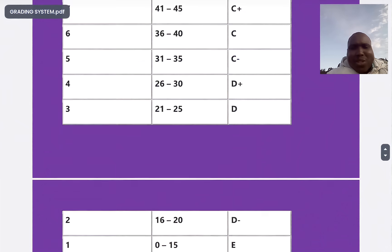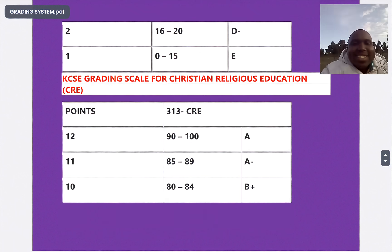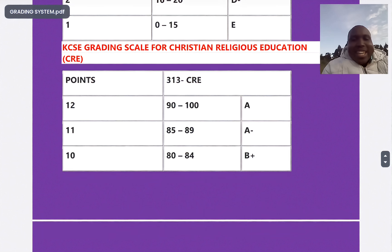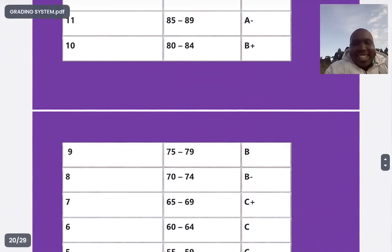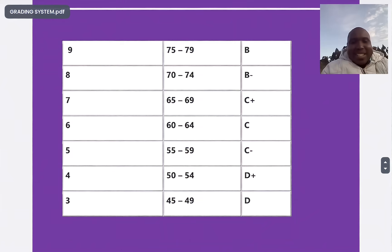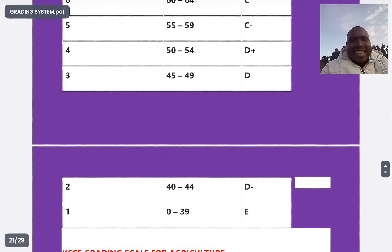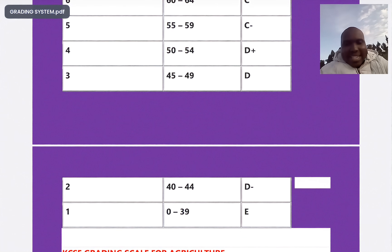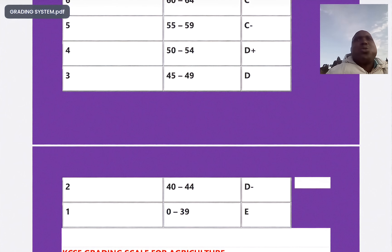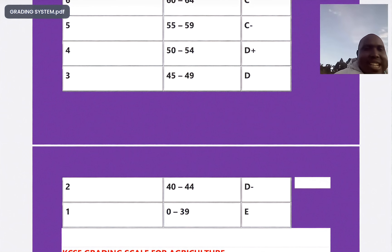CRE — for you to score an A in CRE you must score 90 to 100. A minus is 85 to 89, B plus is 80 to 84. The grading for CRE is really tricky. Anybody who scores less than 40 is an E grade. They assume that CRE is something anybody should know, so if you choose CRE you should be getting more than 40. There is no reason to get an E in CRE — that's why they've given it a very tough grading system.